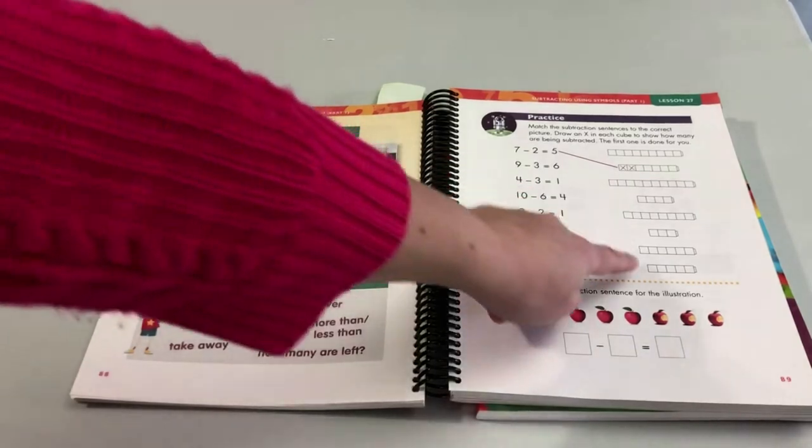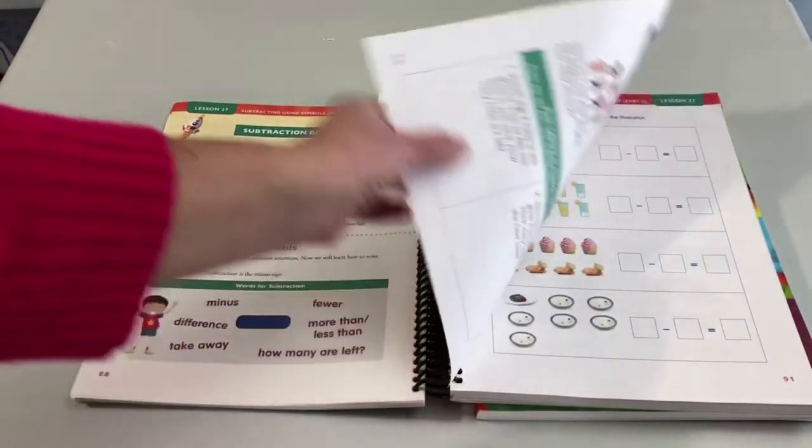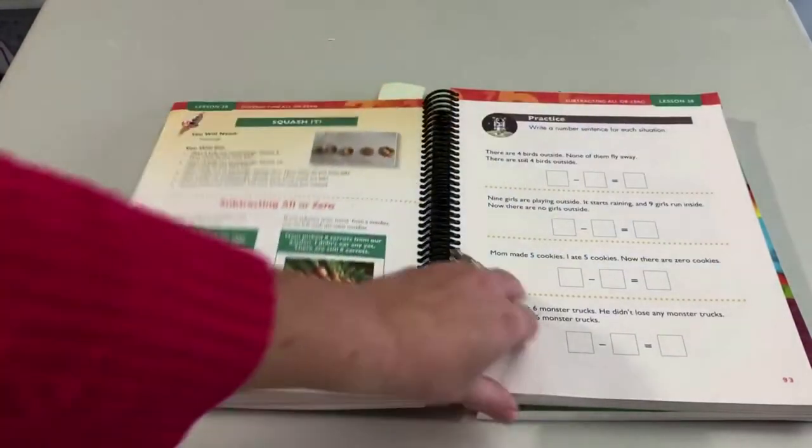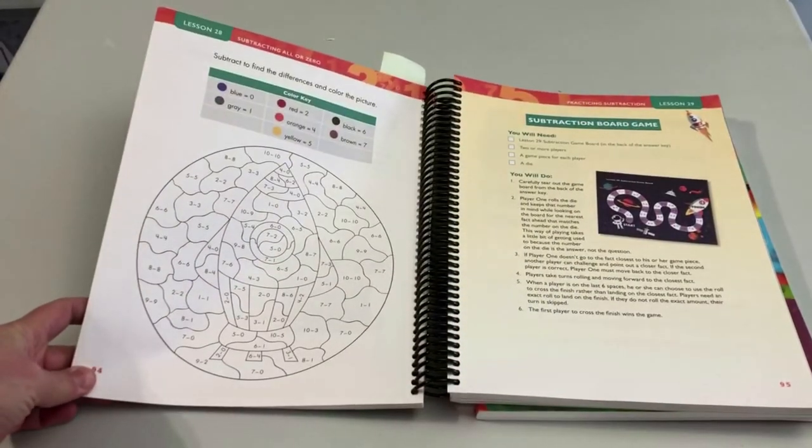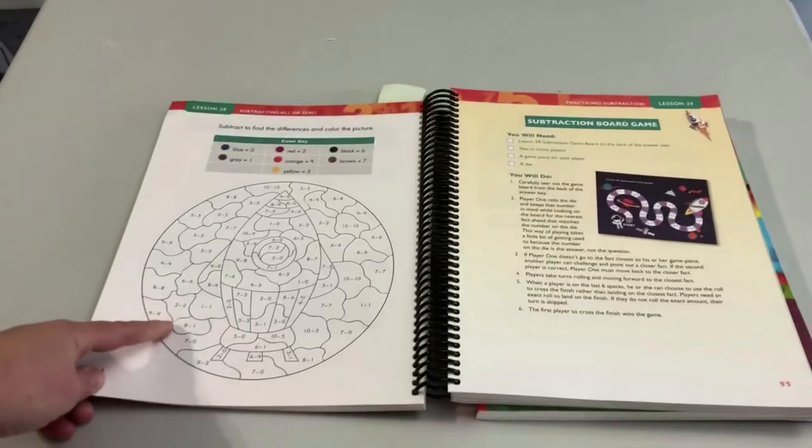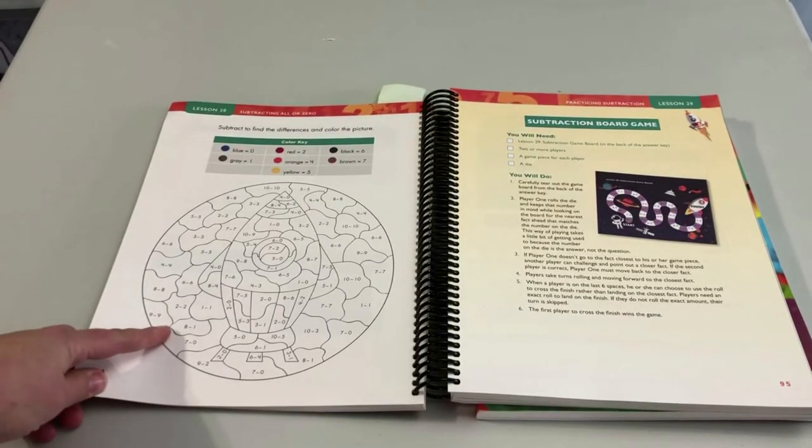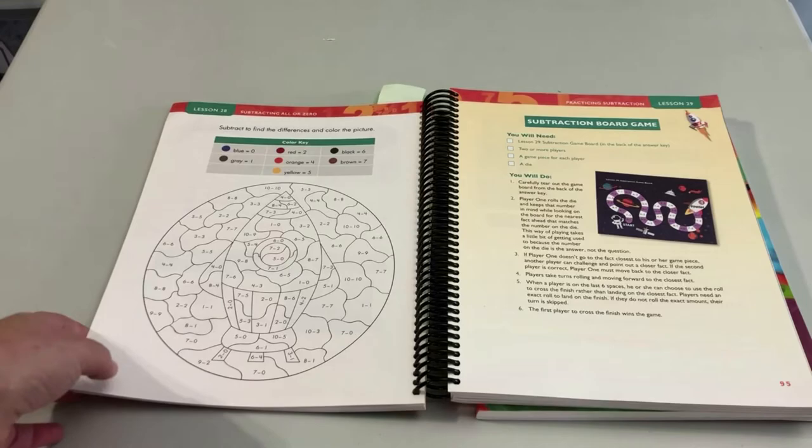And then finally, by the end of the chapter, they're ready for just straight-up abstraction—here are subtraction facts with no picture, no blocks, that type of thing. So that's how the progression works.